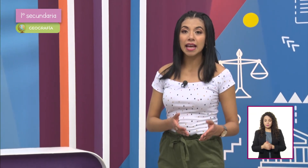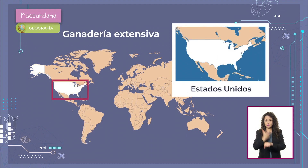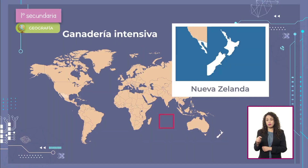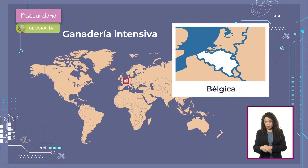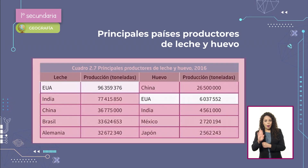La ganadería comercial se divide en ganadería extensiva y ganadería intensiva. La extensiva se desarrolla principalmente en países como México, Argentina, Estados Unidos de América y Nueva Zelanda, utilizando grandes superficies para la alimentación del ganado y aprovechando el crecimiento natural de la vegetación. En la ganadería intensiva, los animales se mantienen en establos o granjas utilizando tecnología de punta para obtener mayor producción, como en el norte de México y en lugares del mundo como Bélgica y Países Bajos. Los principales productores de leche y huevo son Estados Unidos de América, India y China.